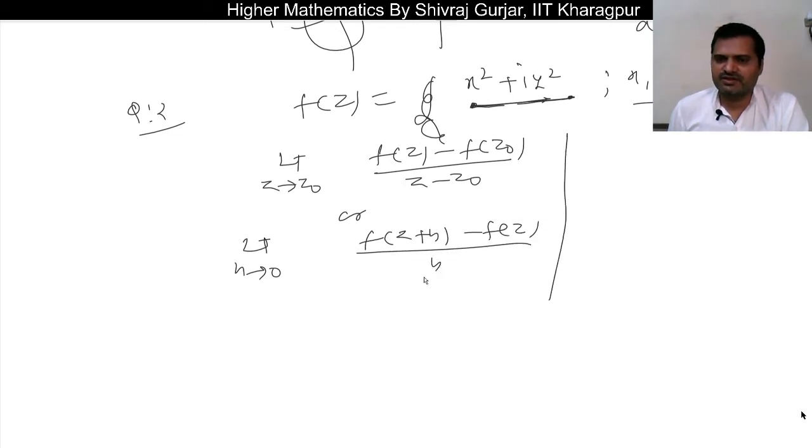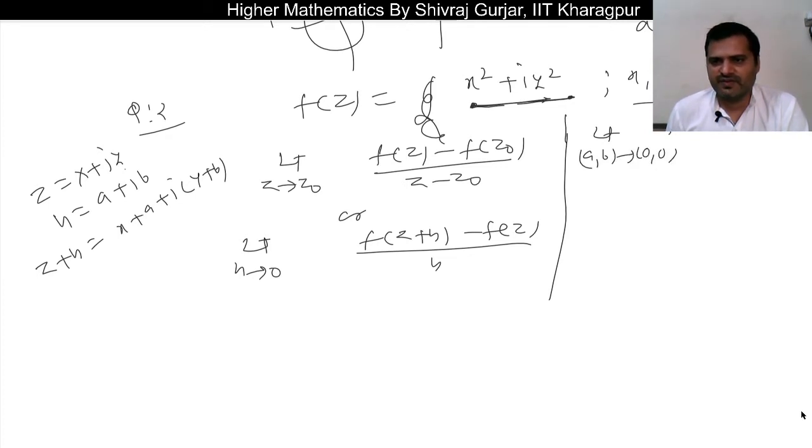Okay, because at the end we have to reach there, so why not start with this? So if we use this, we can use z is x + iy and let us say h as a + ib where a and b are real, and when h is approaching zero, a and b will also close to zero.